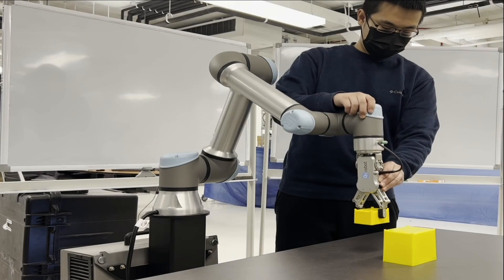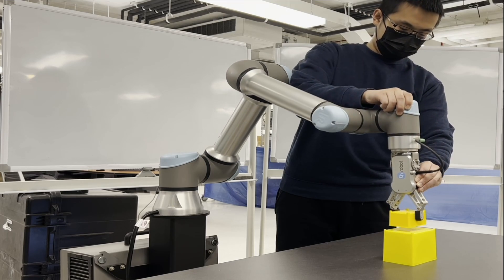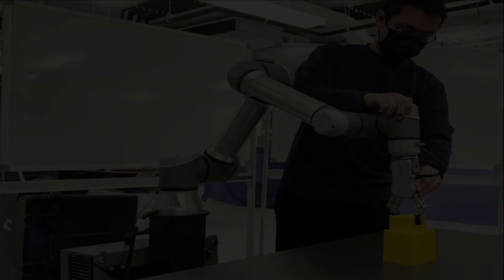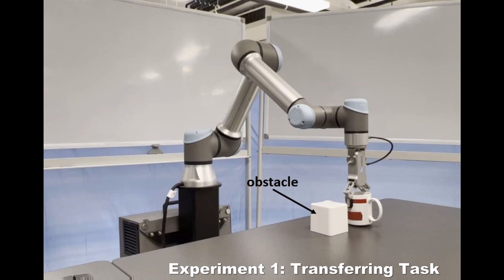In the stacking task, the end effector is required to stack the small block up to the big one. To evaluate this trained motion planning policy, three experiments are conducted.